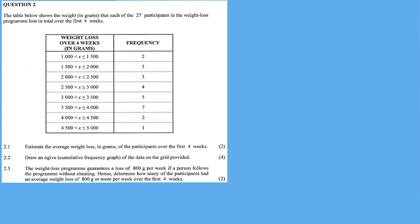The table below shows the weight in grams that each of the 27 participants in the weight loss program lost in total over the first four weeks. So question one was the weight of the participants, but now question two, over a course of four weeks, right? How many participants were to lose in their weight in grams. Now, we see by a frequency table, 2.1, estimate the average weight loss in grams of the participants over the first four weeks. So 2.1 is for the average weight loss, meaning the mean. Since this is a frequency table, we need the midpoints for the range to multiply by our frequency.